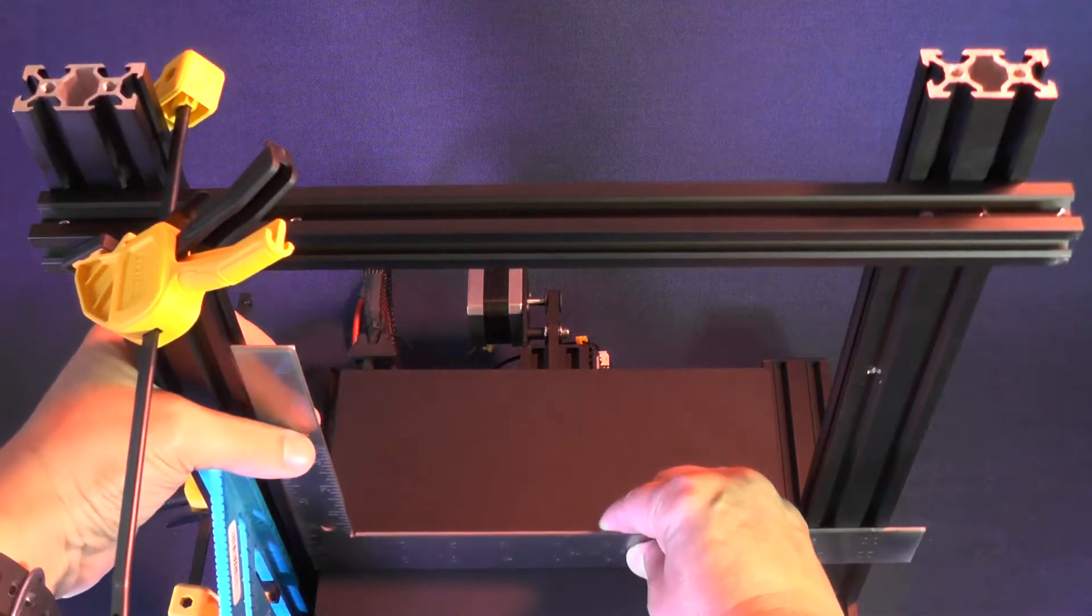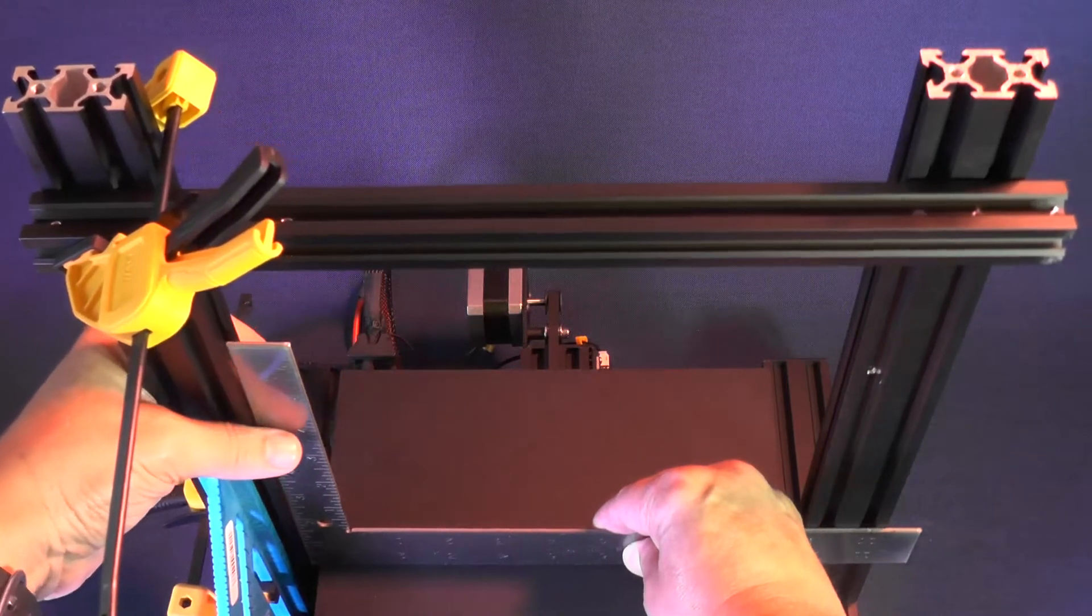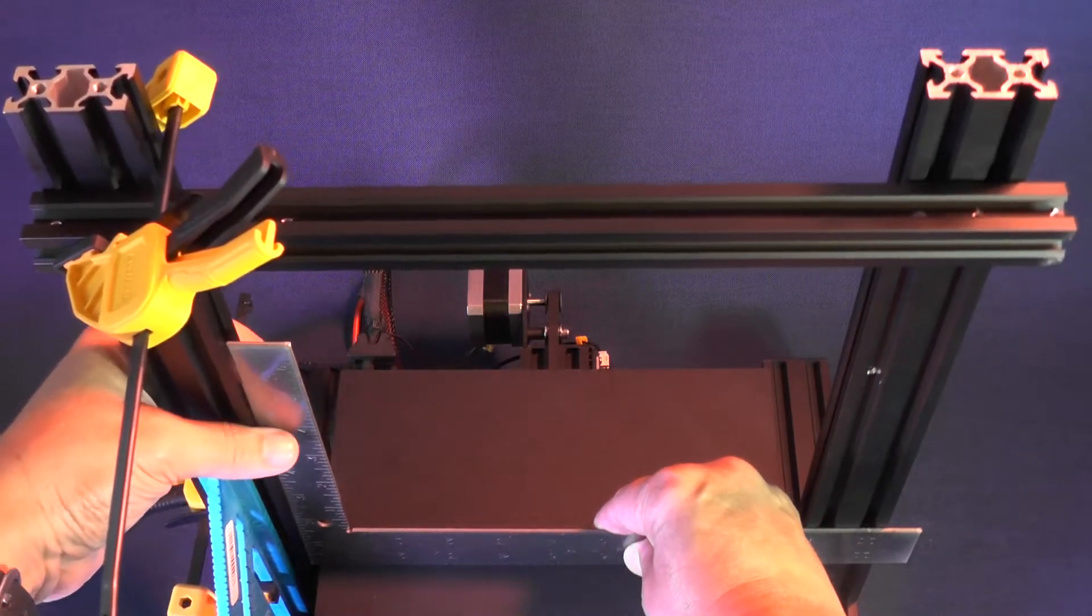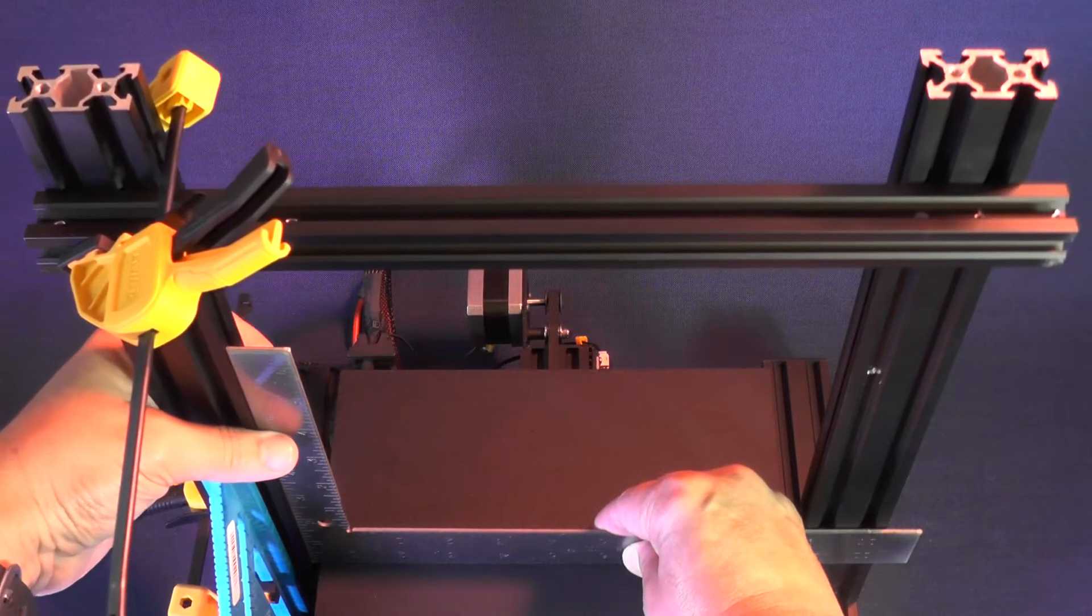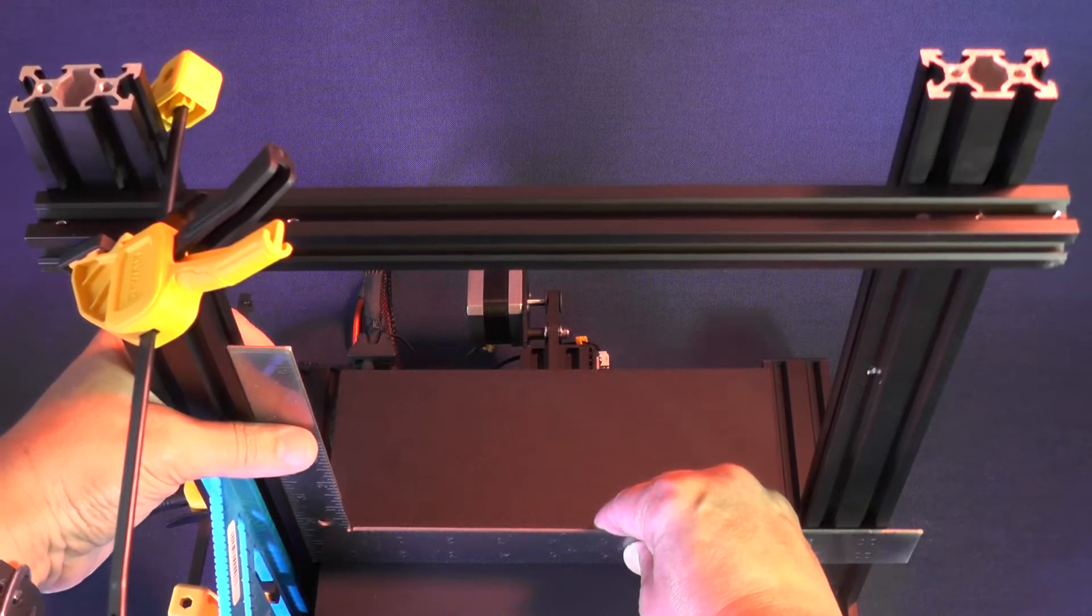Now, you pick up the other square that I'm sure you already have in your toolbox and use it to make sure that the aluminum extrusion is always at a 90 degree angle in relation to the build plate.